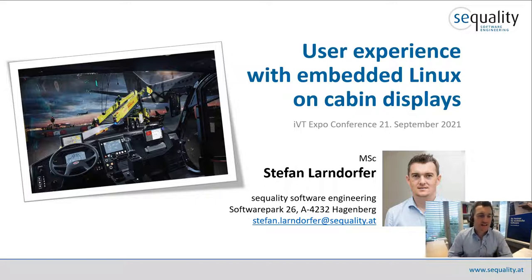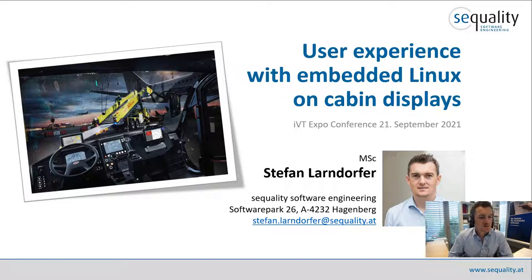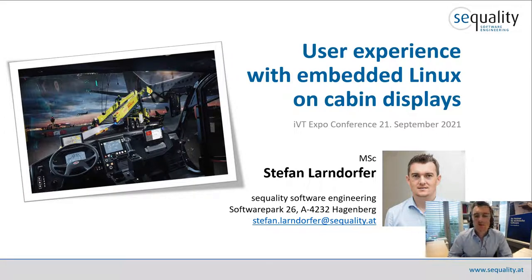On the left hand side here on the screen you can see a typical scenario where we implemented software for a cabin. You can see an instrument cluster and a center display with touch screens that run embedded Linux, using a lot of C++ and Qt to run the displays. This is the background where we come from, and I will tell you my experience on how to do such systems and what kind of impacts they have on overall system design.